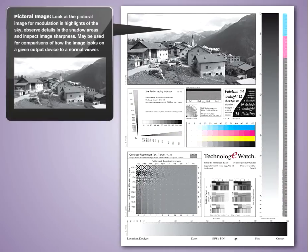Pictorial image. Look at the pictorial image for modulation and highlights of the sky, observe details in the shadow areas, and inspect image sharpness. May be used for comparisons of how the image looks on a given output device to a normal viewer.